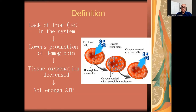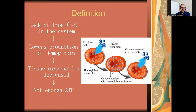So what is iron deficiency anemia? Just like the name says, there is a deficiency or a lack of iron in the system. This lack of iron lowers the production of hemoglobin. Hemoglobin is a protein that allows oxygen to bind and provide energy to the tissues. Everywhere in our bodies are made of tissue and cells, so if you don't have enough hemoglobin, you don't have enough oxygen, and without enough oxygen, you have decreased tissue oxygenation — meaning your cells do not get enough energy and cannot perform the necessary metabolic functions on a daily basis.